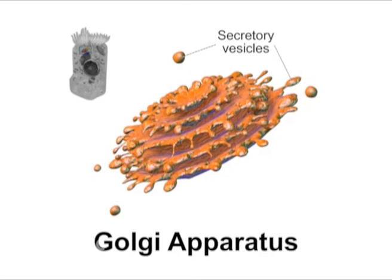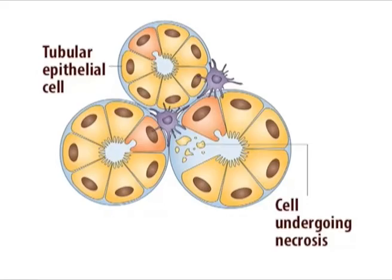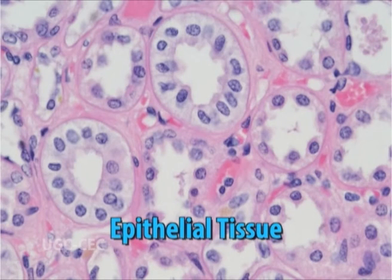Proteins are sorted into the regulated secretory pathway in the trans-Golgi network, where they are packaged into specialized secretory vesicles. These secretory vesicles — which are larger than other transport vesicles — store their contents until specific signals direct their fusion with the plasma membrane. A further complication in the transport of proteins to the plasma membrane arises in many epithelial cells, which are polarized when organized into tissues, and whose plasma membrane is divided into two separate regions: the apical domain and the basolateral domain.